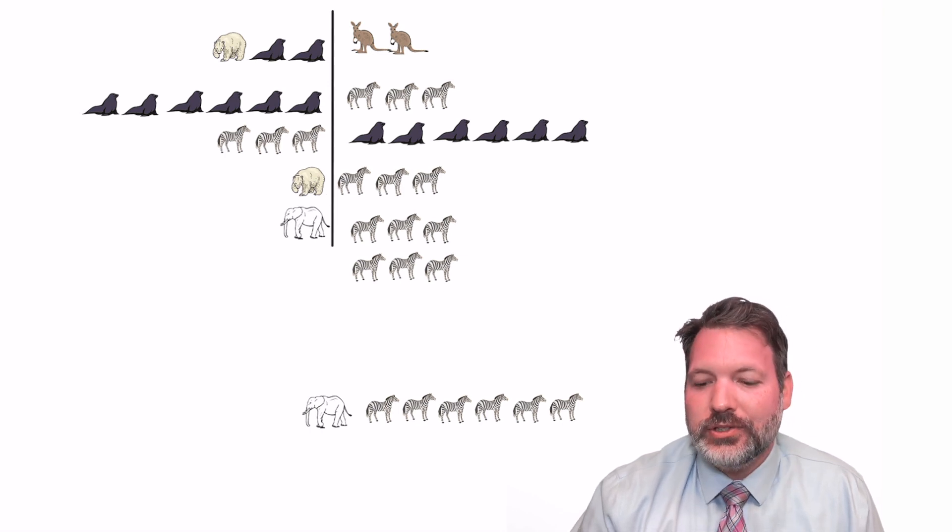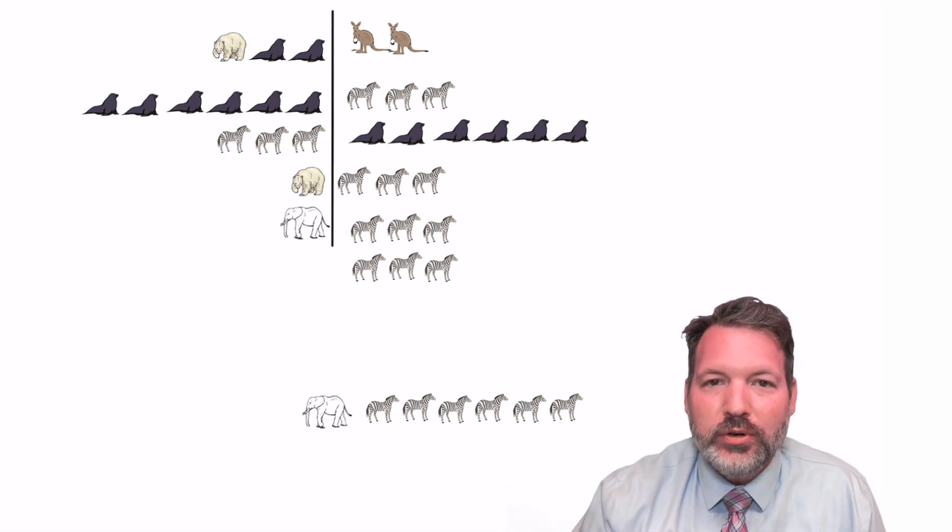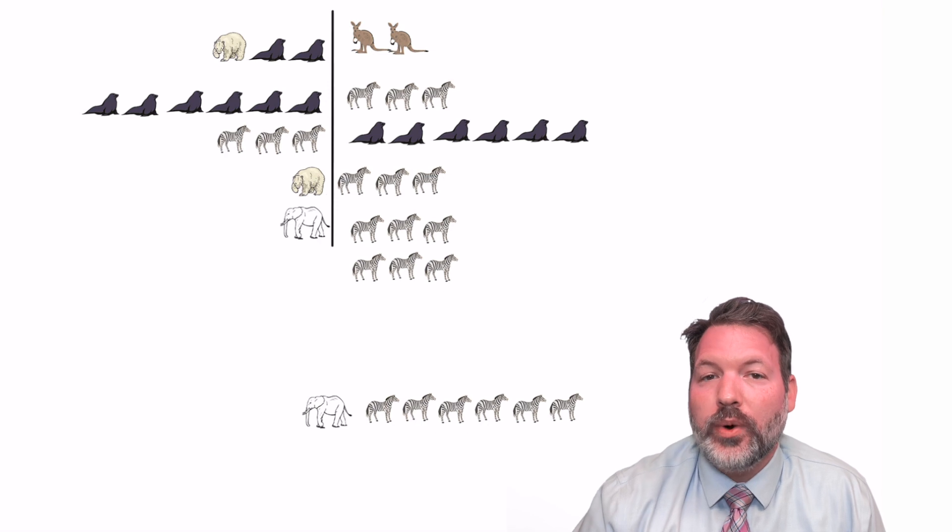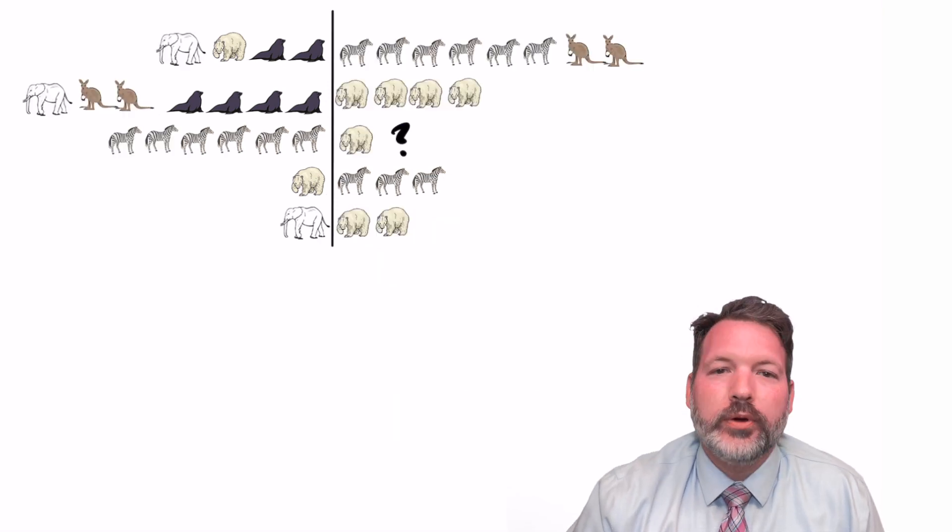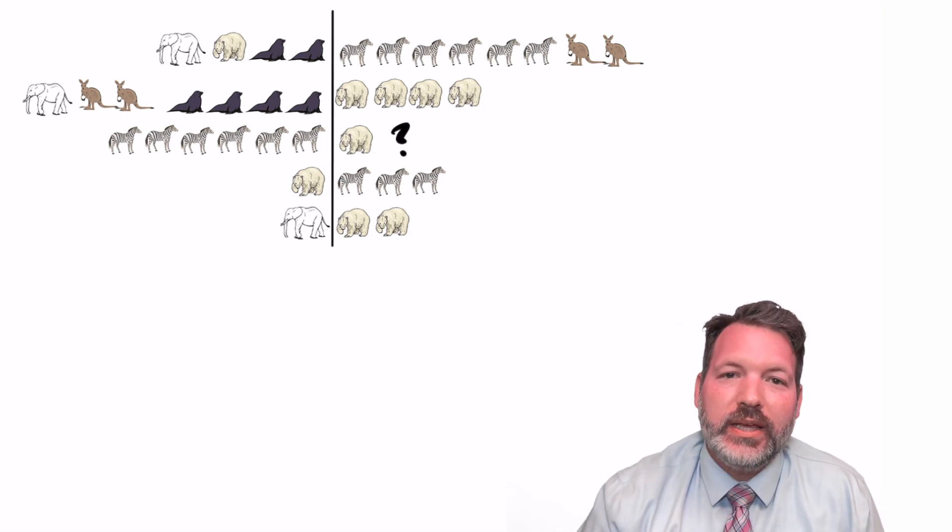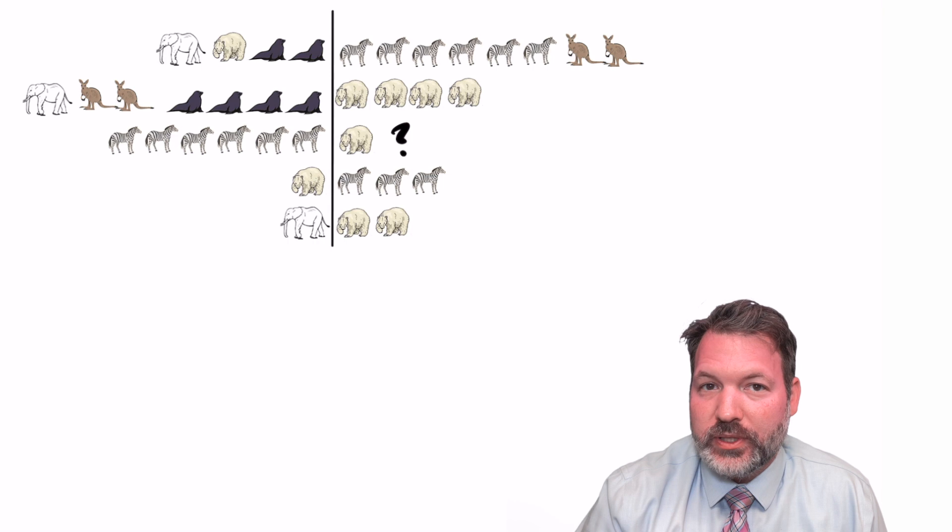But then the disadvantage is we're constantly having to move around certain animals. That kind of gets old after a while. It's not super easy to keep track of what's equivalent to what when we do it this way. So what if we approach the problem again, but this time we introduce a level of abstraction?